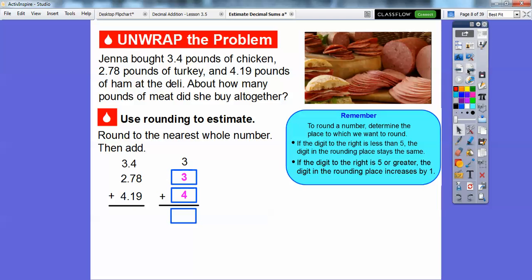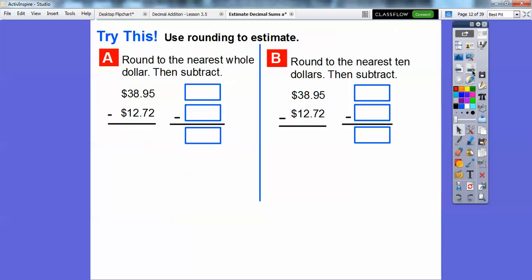The 1 is less than 5. So 3 plus 3 is 6 plus 4 is 10. She bought about 10 pounds of meat. Easy enough, huh?